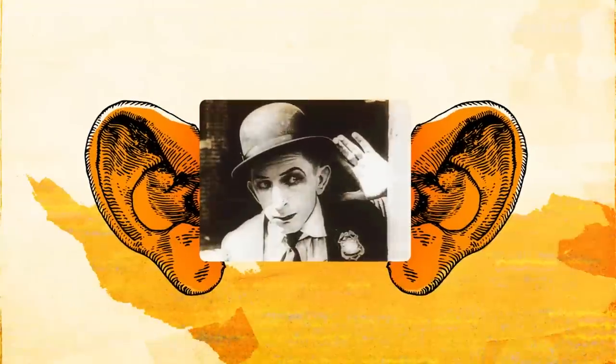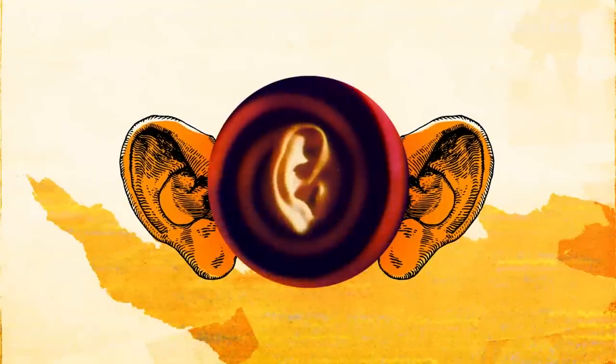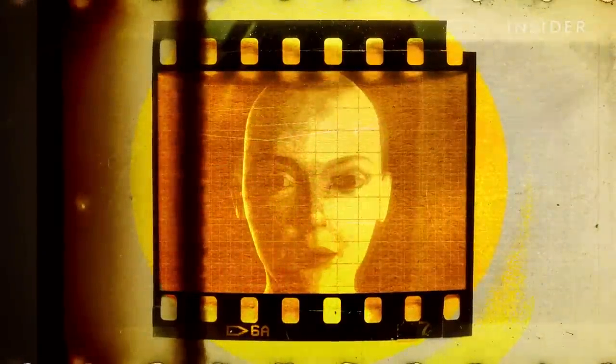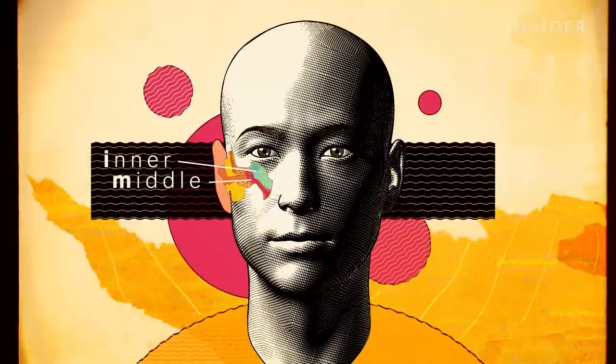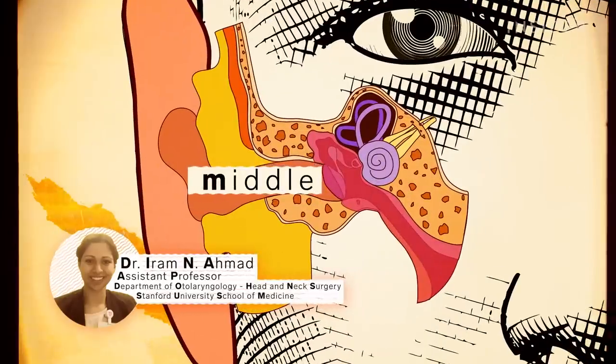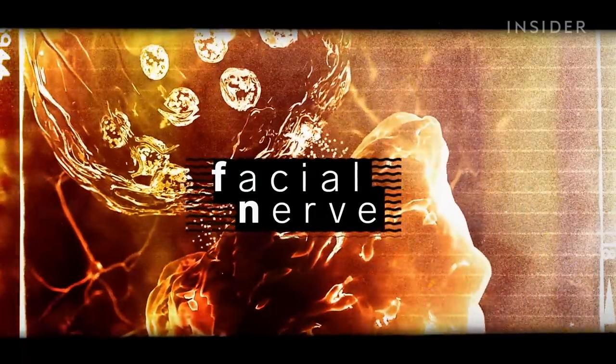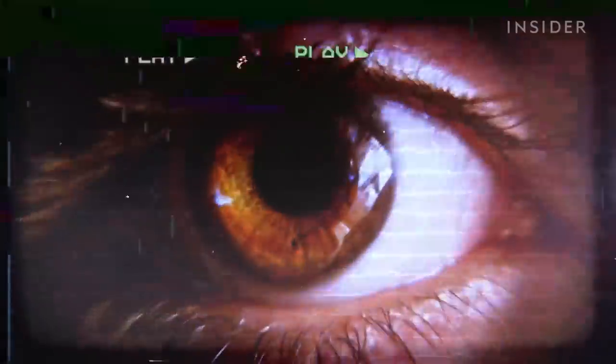We think of ears as these flappy appendages that stick out of our heads. But the most important structures are actually on the inside, and they're known as the inner and middle ear. Inside your middle ear is the nerve that moves the muscles of your face, aka the facial nerve. And if it becomes inflamed or injured, say from a nasty ear infection, you can lose control of the muscles in your face.